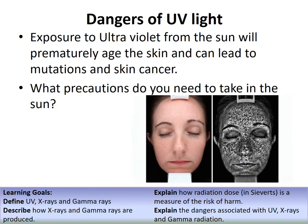Dangers: UV radiation is ionizing and particularly damages skin. It can prematurely age skin, cause mutations, and lead to skin cancer. Precautions in the sun include wearing a hat, protecting your eyes (UV can cause cataracts), applying sun cream, and wearing a t-shirt. A common mistake is to say UV causes cancer generally - it specifically causes skin cancer, because UV does not penetrate deeper than the surface layers of the skin.